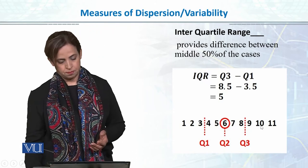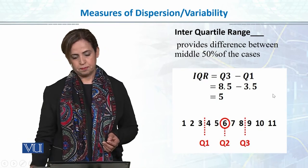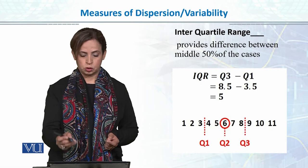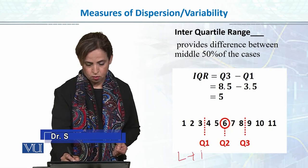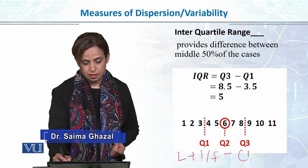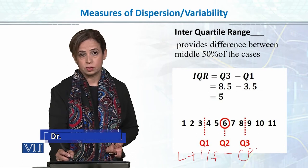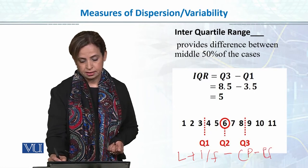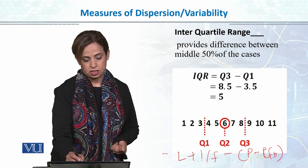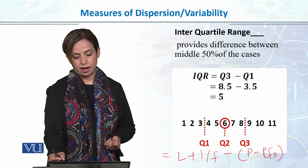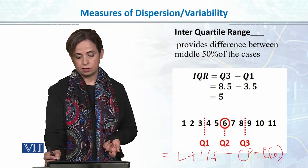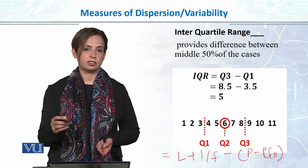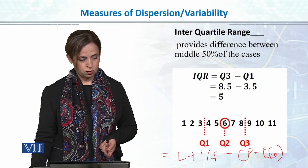We can also calculate interquartile range for grouped data using the percentile formula, similar to how we calculated median: L plus (I over F) times (the required percentile minus the cumulative frequency of the preceding class). For Q1, I calculate the 25th percentile, and for Q3, I calculate the 75th percentile. I then subtract to get the interquartile range.